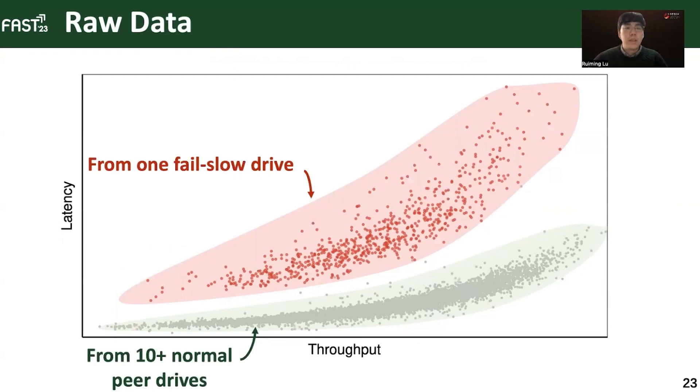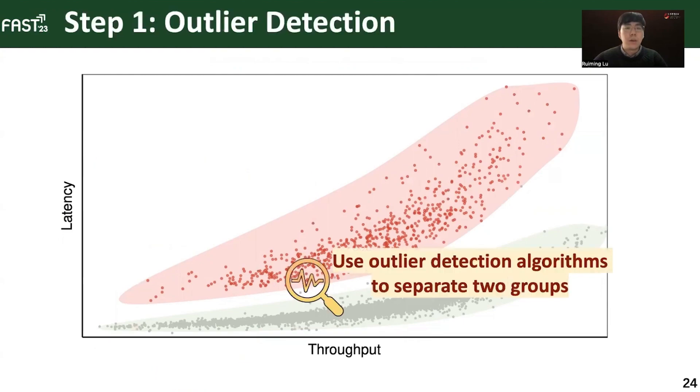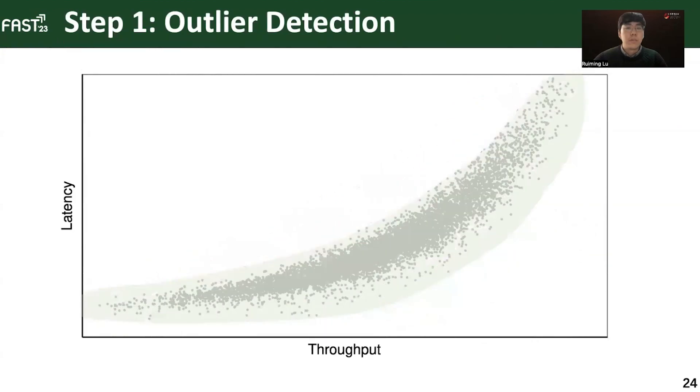So, how can we identify the fail-slow drive with such a deviating distribution? Recall that we seek to use regression models to define a statistically normal drive, and subsequently use its upper bound as the adaptive threshold. Therefore, before applying regression models, the first step is to root out the noisy samples using outlier detection algorithms. The remaining samples, which are from the lower green group, are from the distribution of normal drives in this node.